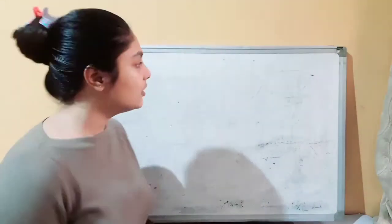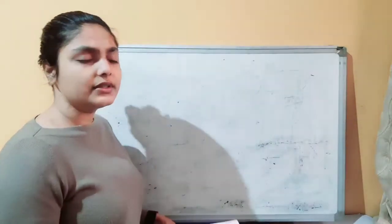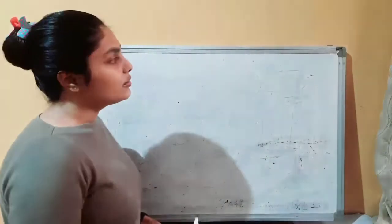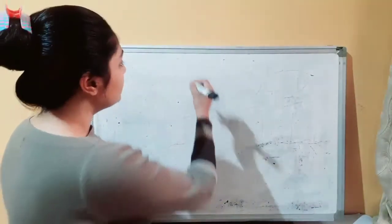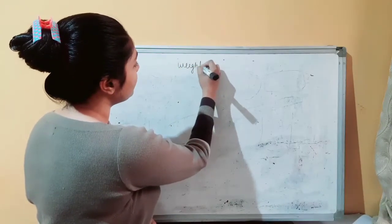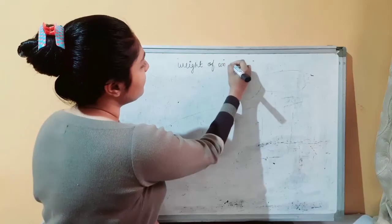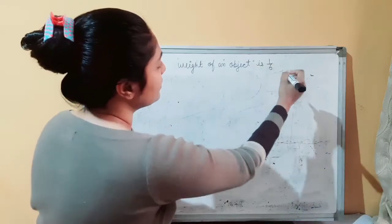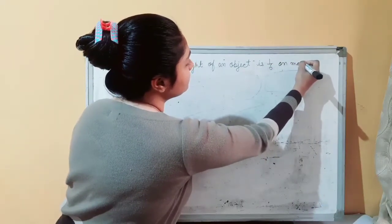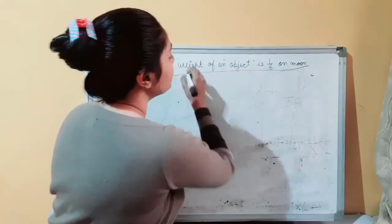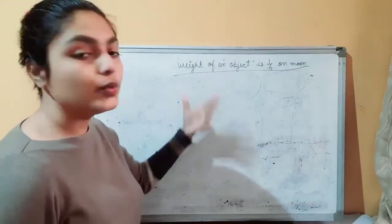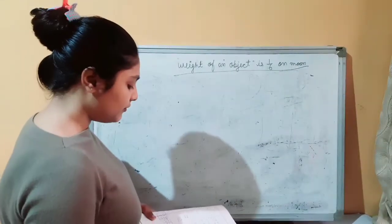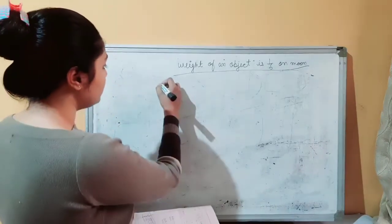You may take your notebooks to write along for revision. I have solved it once in my notebook for reference. Let's start. What we are proving is that the weight of an object on the moon is 1/6th compared to Earth. Theoretically, we know how this is possible. We are going to take the formula for calculating weight.